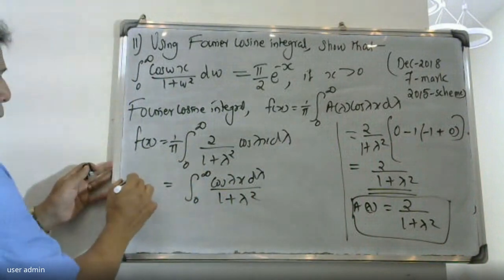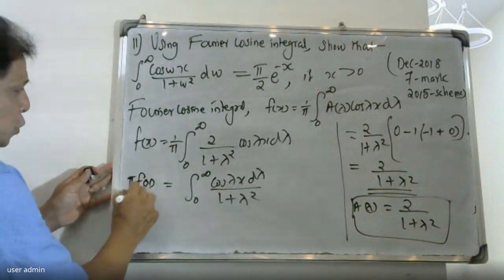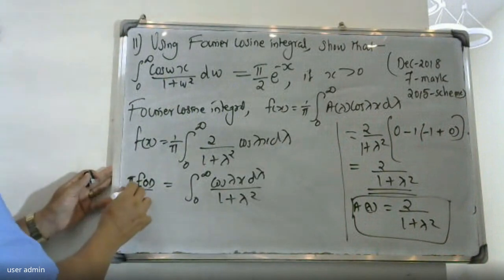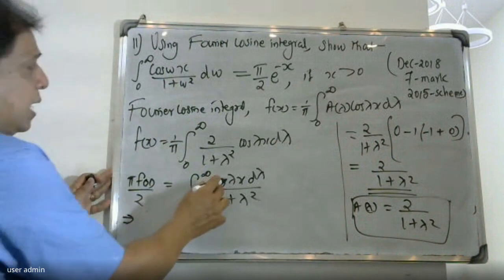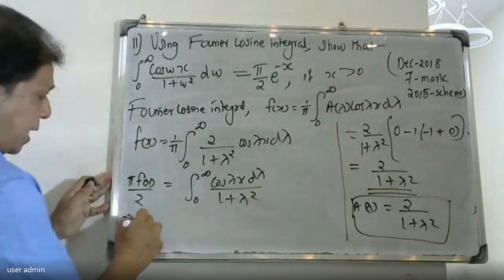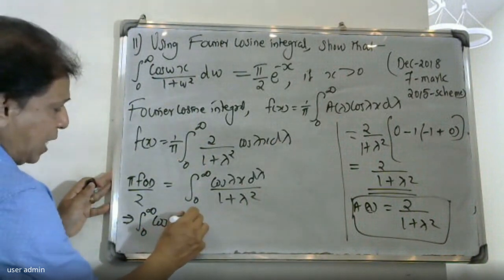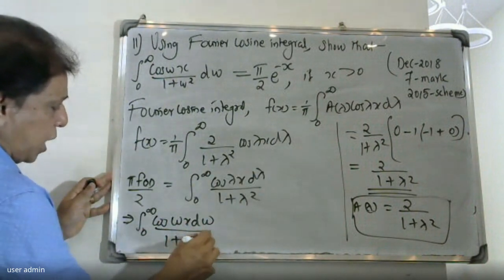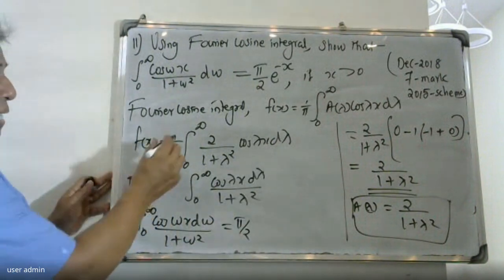Since f(x) = e^(-x), we have π · e^(-x). Replacing λ with ω: ∫₀^∞ cos(ωx)/(1 + ω²) dω = π/2 · e^(-x). This is the required result.